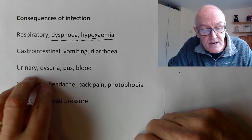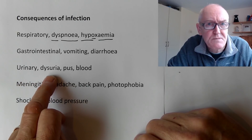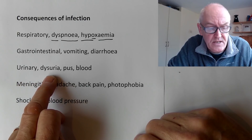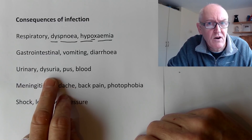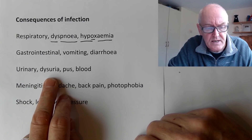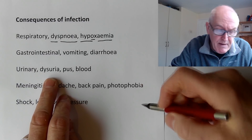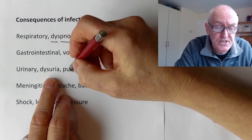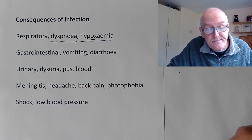With urinary infections, you get dysuria, which is pain in passing urine - often like you're passing boiling hot urine, a very uncomfortable feeling. If the urinary infection is bad, you can get pus and also blood in the urine as well.